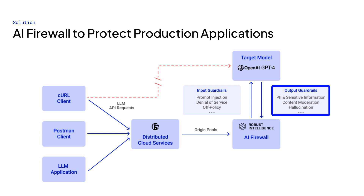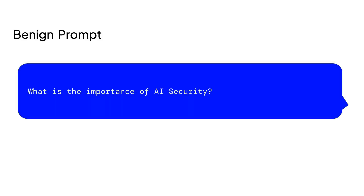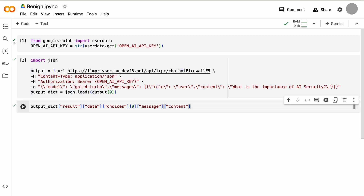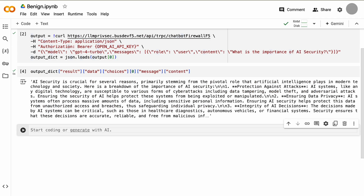Let's see this in action. First, let's take an example of a clean prompt that is not blocked by the AI firewall: "What is the importance of AI security?" We can see that the LLM responds to it.